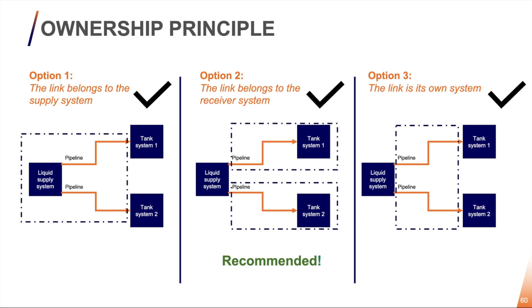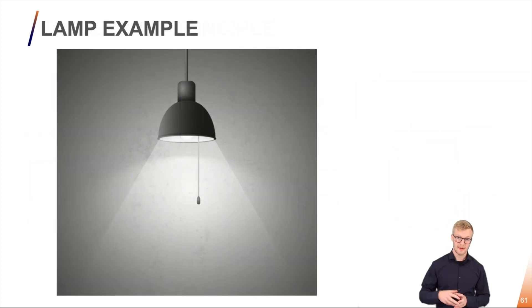Let's take a look at an example. So here we have a lamp that's definitely the receiving system of power from a supplying system which is a power supply system. In between we have a cable, the transport system.